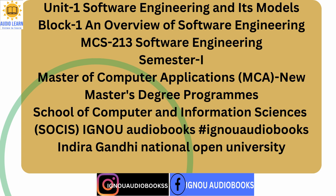1.4.1 Maturity Levels. CMM defines 5 maturity levels. Different organizations are certified for different levels based on the processes they follow. Level 1 — Initial: At this maturity level, software is developed on an ad hoc basis and no strategic approach is used. The success of developed software entirely depends upon the skills of the team members. As no sound engineering approach is followed, time and cost are not critical issues. The software process is unpredictable because if the developing team changes, the process will change.